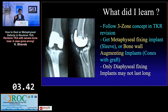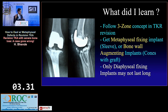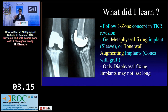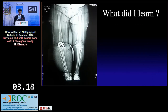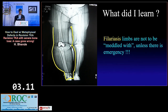The three-zone concept, beautifully described in the previous two lectures, is essential today. If you are going to revise this type of patient, you need either a sleeve or a cone plus a long stem to get good metaphyseal fixation with good diaphyseal stabilization. An implant fixed only diaphyseally — with just a stem and a proximal plate, even if cemented — may not work well beyond five to seven years.